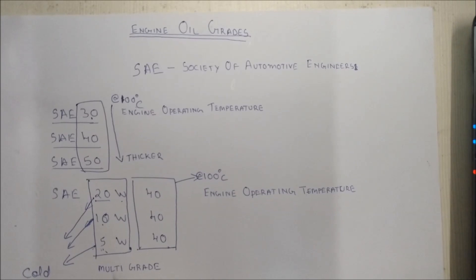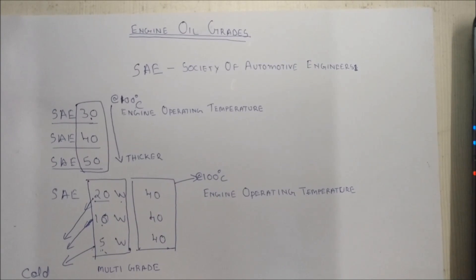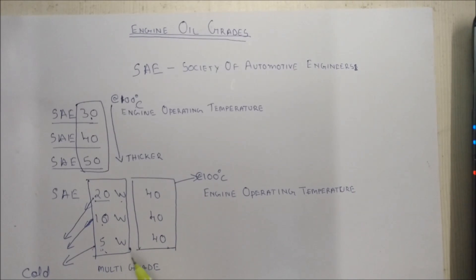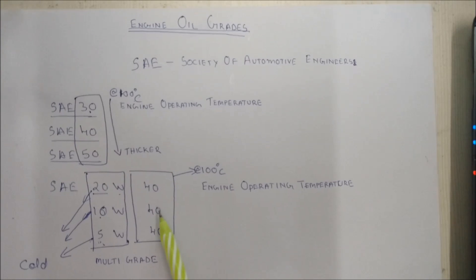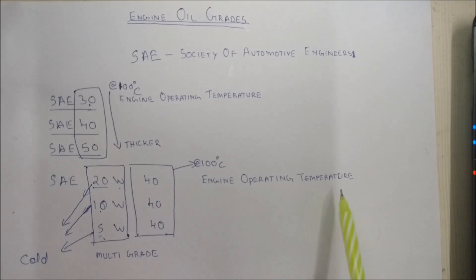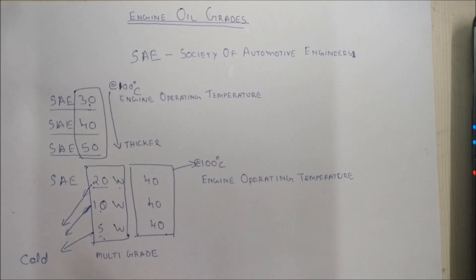The general tendency of an oil is to get thinner as the engine heats up, but in multi-grade oils the opposite happens — as the engine heats up, the oil tends to get thicker and displays a viscosity of 40 at 100 degrees Celsius, the engine's operating temperature. As the engine heats up, the oil needs to get thicker in order to provide protection to the engine.